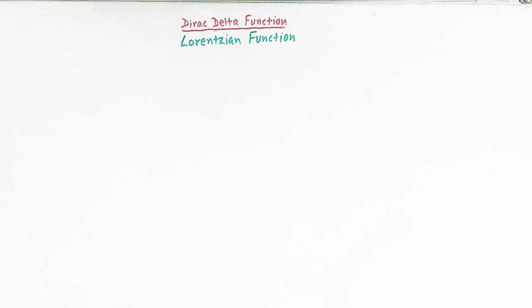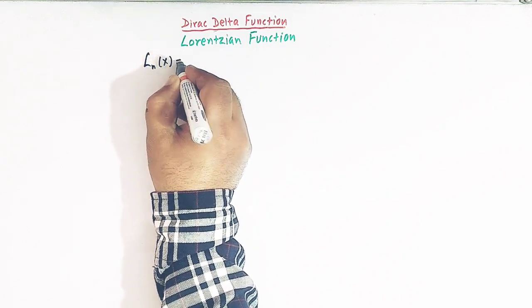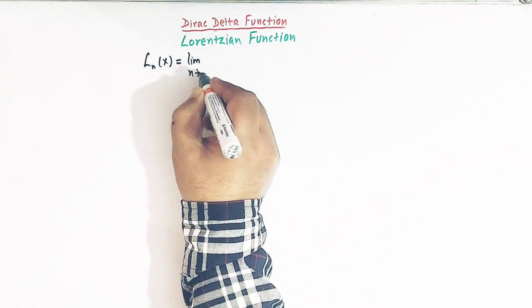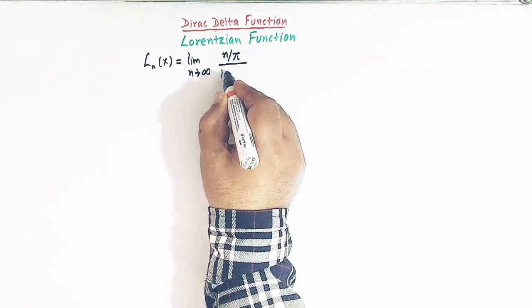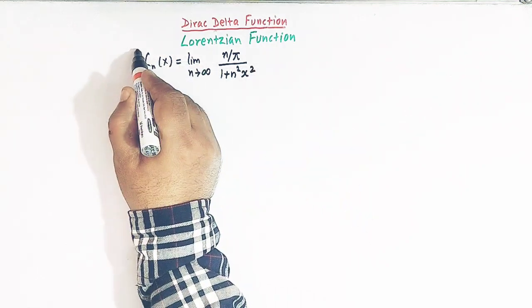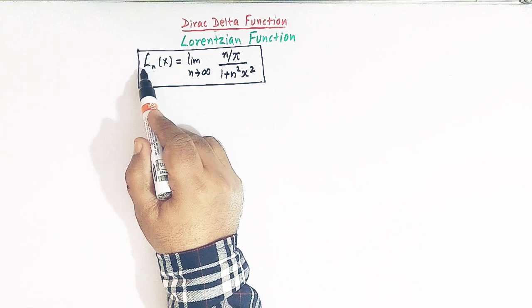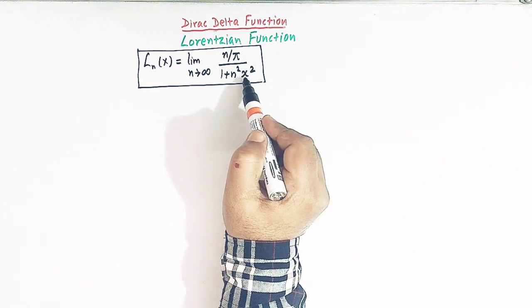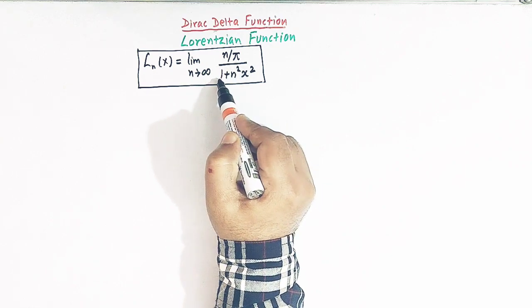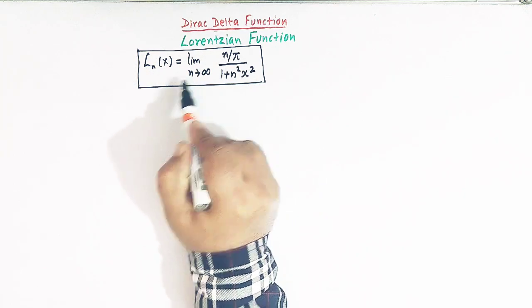Let us first see what a Lorentzian function is. The Lorentzian function is defined as L_n of x, which is equal to the limit as n tends to infinity of n over pi divided by 1 plus n squared x squared. So the Lorentz function is a sequence in terms of n.